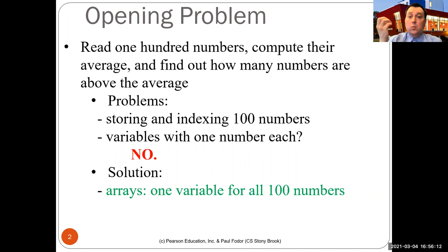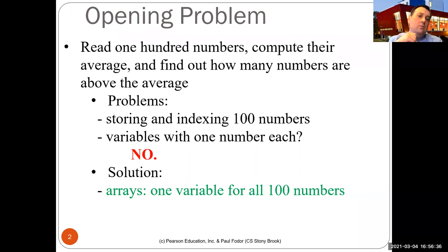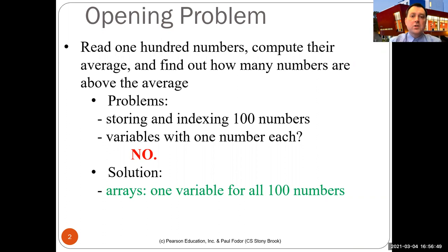One possible solution is to have a different variable for every number — n1, n2, n3, up to n100 — and an if statement for each to check if it's above or below the average. A program doing that would take about 500 lines of code. The simpler and more efficient solution is an array: one variable that stands for all 100 numbers, accessible with an index.